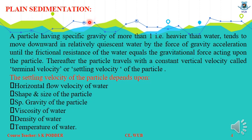Plain Sedimentation. A particle having specific gravity heavier than water tends to move downward in relatively quiescent water — meaning there is no movement of water — by the force of gravity, until the frictional resistance equals the gravitational force acting upon the particle. Thereafter, the particle travels with a constant vertical velocity called terminal velocity or settling velocity.